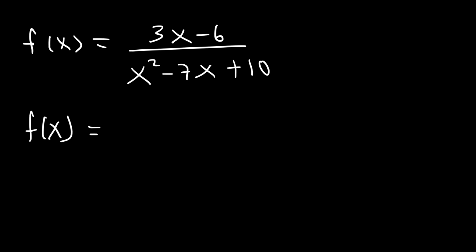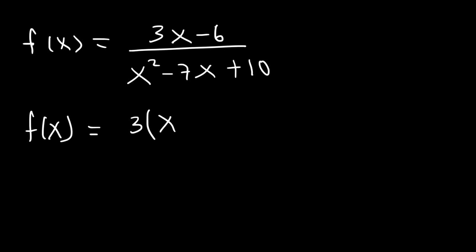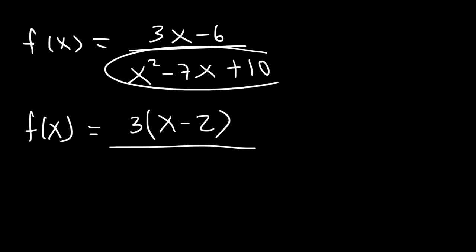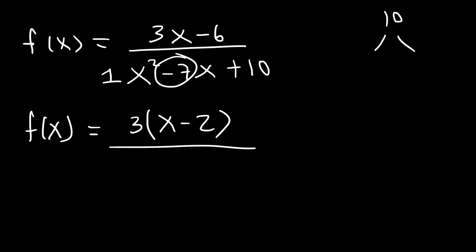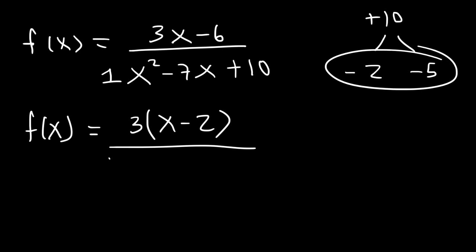To factor 3x minus 6, all we could do is take out the GCF — the greatest common factor — which is 3. That gives us 3 times (x minus 2). Now to factor the trinomial x squared minus 7x plus 10, find two numbers that multiply to 10 but add to negative 7. Negative 2 times negative 5 is positive 10, and those two add up to negative 7. So it factors as x minus 2 times x minus 5.